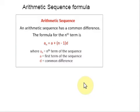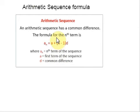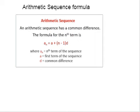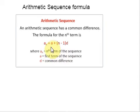We can think of an arithmetic sequence as a function on the domain of the natural numbers. It is a linear function because it has a constant rate of change. The common difference is the constant rate of change, or the slope of the function. So we can construct the linear function if we know the slope and the vertical intercept. The formula is: An equals A1 plus (N minus 1) times D, where An is the nth term of the sequence, A1 is the first term of the sequence, and D is the common difference.